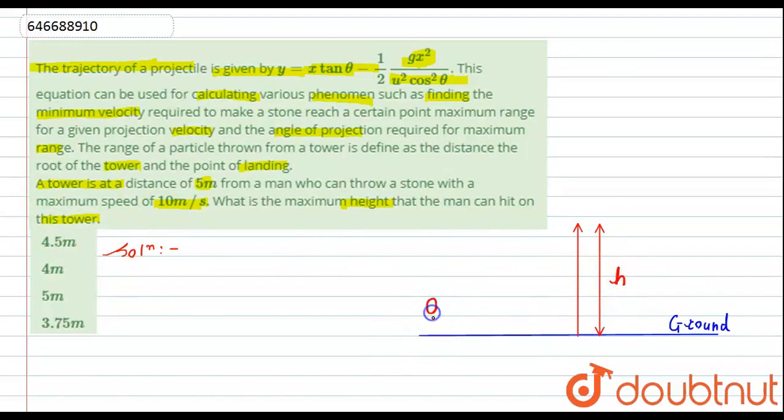At a distance of 5 meters from the tower, the man is standing. Let's say the man throws a stone in upward direction with velocity of 10 meters per second at an angle of theta. Obviously it will do the trajectory motion and it will reach up to the height of the tower. Let's say it reaches up to this much of height, and this much of height is nothing but h.